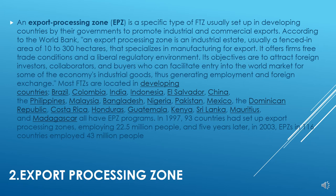An export processing zone is a special type of free trade zone usually set up in developing countries by their governments to promote industrial and commercial exports. According to the World Bank, an EPZ is an industrial estate — usually a fenced area of 10 to 300 hectares — that specializes in manufacturing for export. It offers firms free trade conditions and a liberal regulatory environment, with objectives to attract foreign investors, collaborators, and buyers, thus generating employment, investment, and foreign exchange.